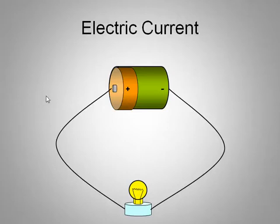Hi again. We're now going to talk about electric current. Here we have a battery or voltage source connected to a bulb with some conductive wires.